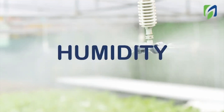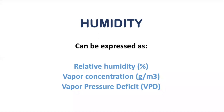Vapor pressure deficit is a measurement related to humidity. We know humidity in our growing systems can be expressed as relative humidity, which is the most common measurement we usually use inside growing systems and is expressed as percentage. Then we have vapor concentration, which is the amount of water present in a specific volume of air. And last, we have VPD.